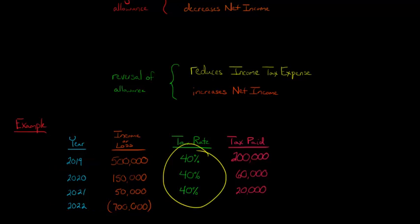Each year they're going to face a tax rate of 40%. In 2019, they have $500,000 of income, 40% tax rate, so they pay $200,000. This tax paid is just this column, the income or loss, times the tax rate of 40%. With this $700,000, in the United States, you can carry a loss back two years, or forward 20, at least that's the current tax rules.